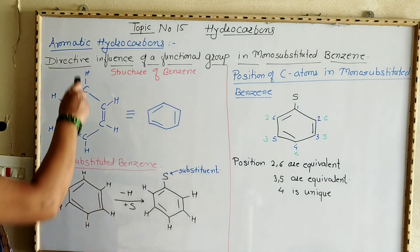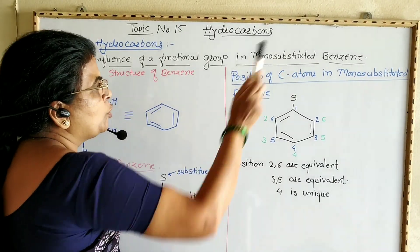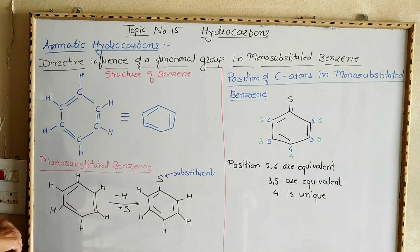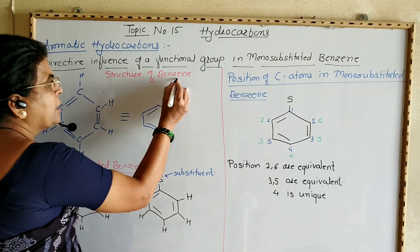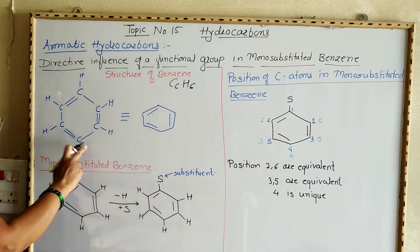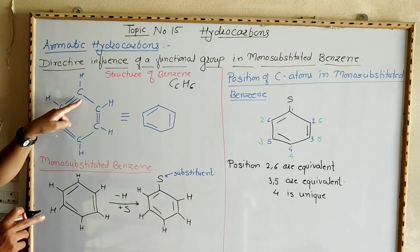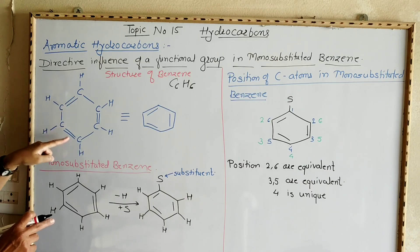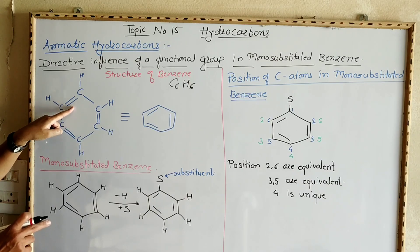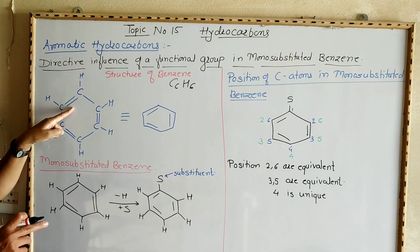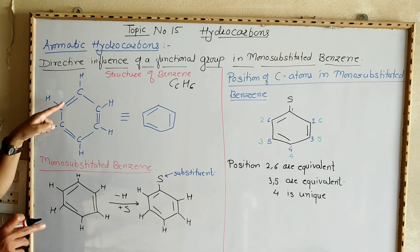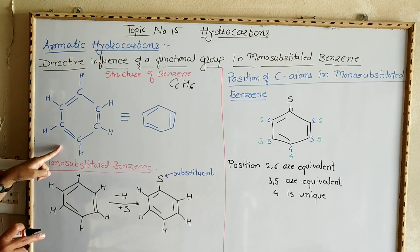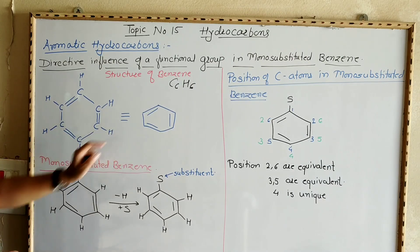Now we are going to see the next point: directive influence of a functional group in monosubstituted benzene. The molecular formula of benzene is C6H6. It is a hexagonal ring; at each corner of the hexagon there is a carbon atom, giving six carbon atoms arranged in alternating carbon-carbon double and single bonds, with each carbon bonded to a hydrogen atom.